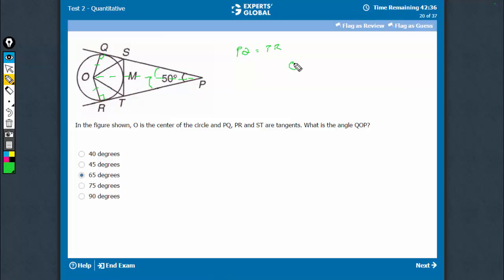So, angle QOP becomes 180 minus 90 minus 25.